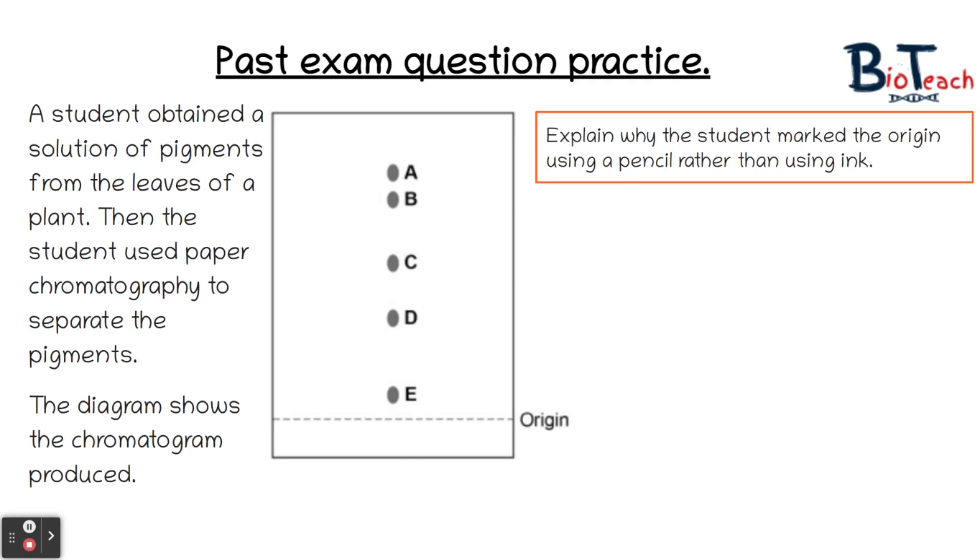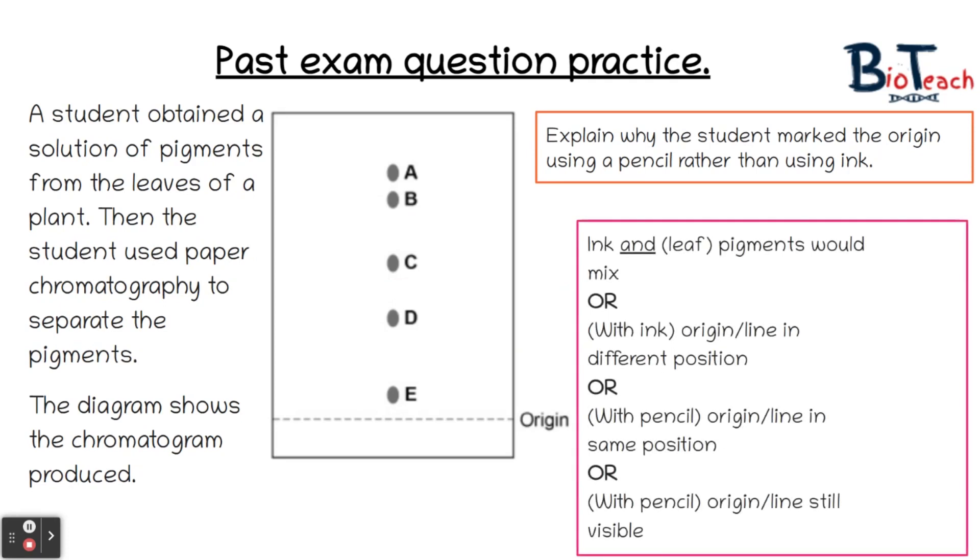If you remember from doing the chromatogram, the solvent will pass through the line of origin. If you drew the line of origin in pen then the solvent would basically carry the ink all the way through the chromatogram and it would mix with the leaf pigments. So we don't want that to happen. So the answer as to why the student marked the origin using pencil rather than using ink is to say that we are preventing the mixing of the ink and the leaf pigments. We are ensuring that the pencil line is also still visible. If you used an ink pen to draw the line of origin then the solvent would carry the ink away and you would not be able to see the line of origin, whereas with a pencil there's no pigments in there so that pencil line stays visible to us during the course of the experiment.